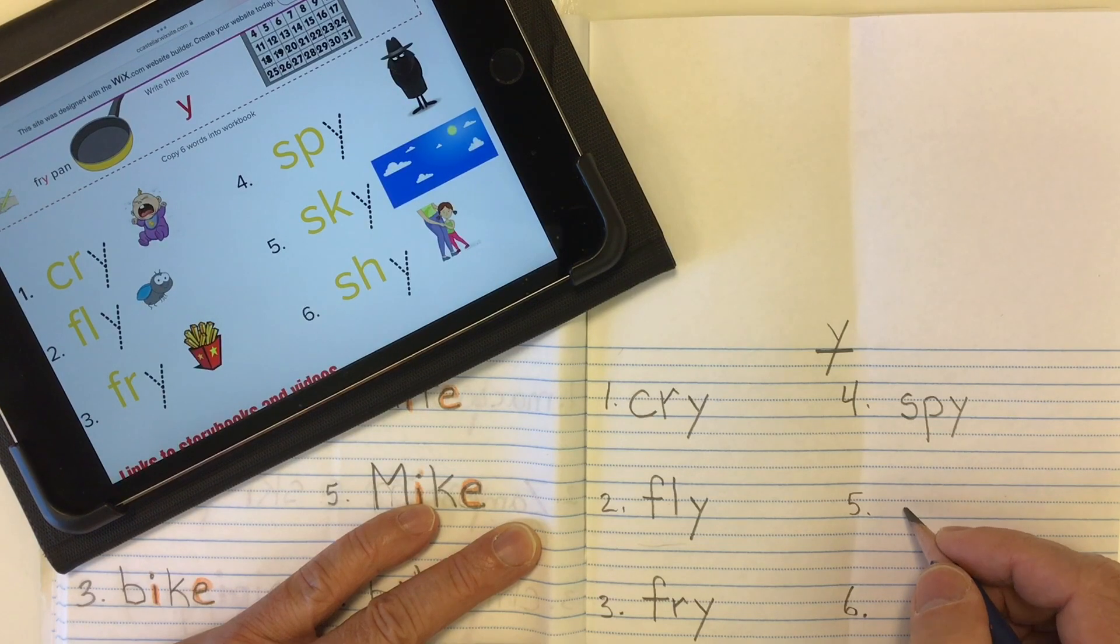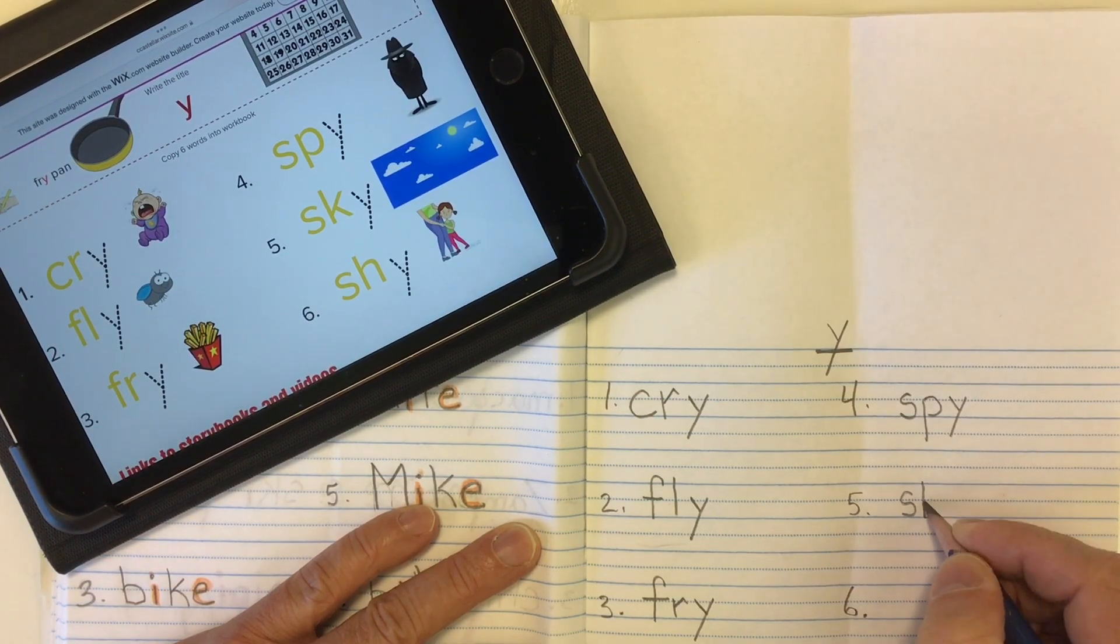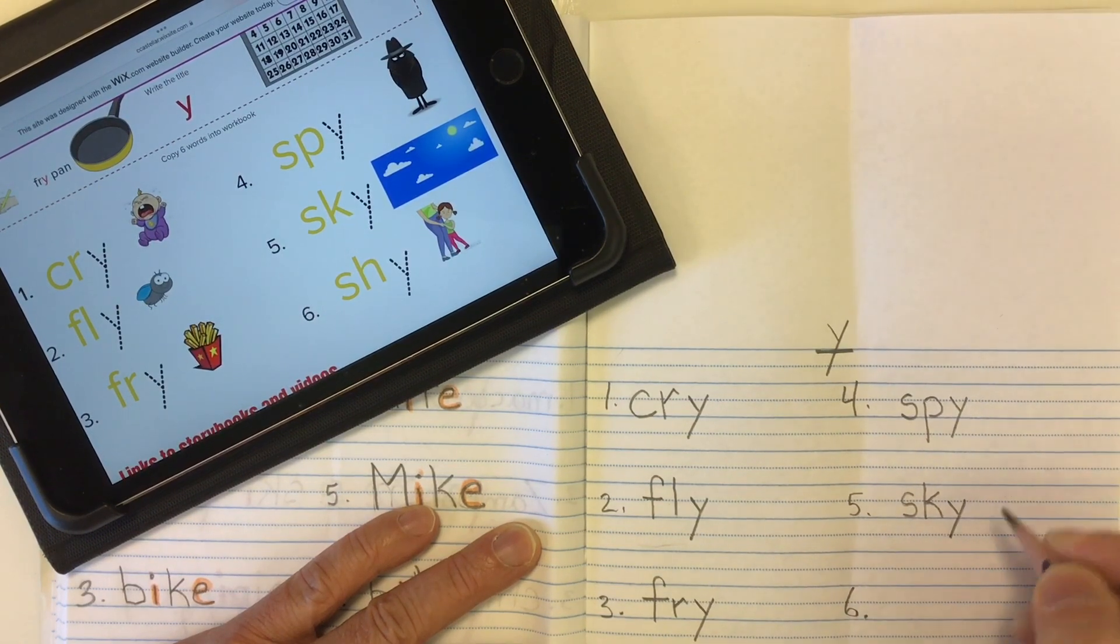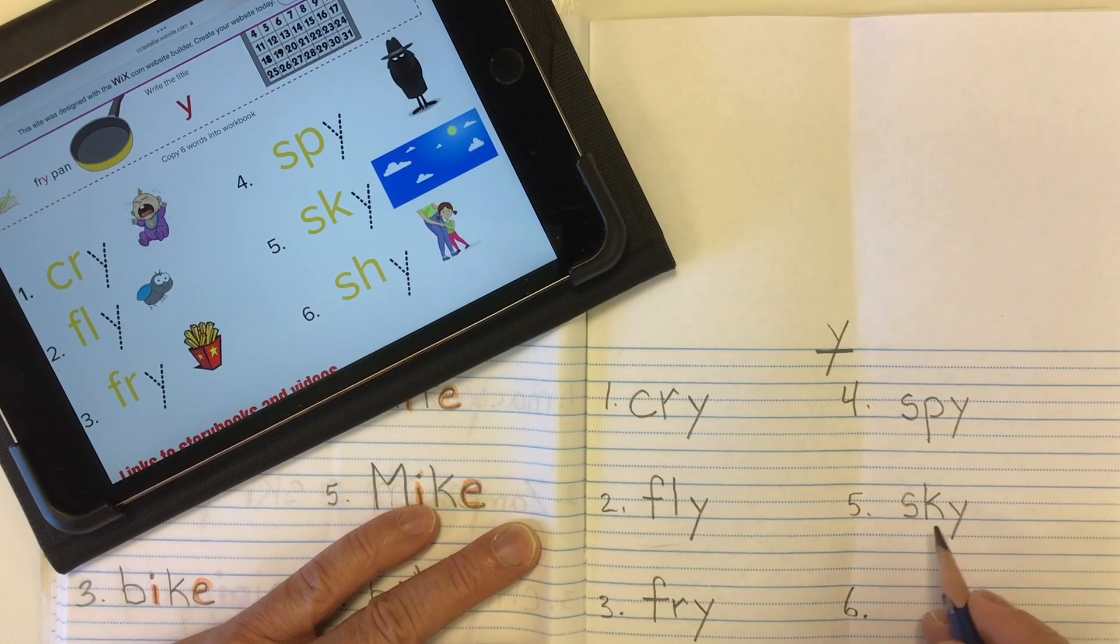Word number five is sky. The sk, sk, comes from our consonant blend of S-K, sk. And then our I from the letter Y at the end, sk, I, sky, sky.